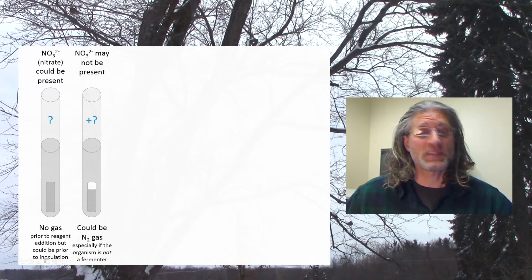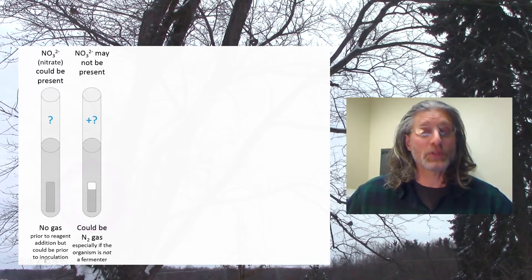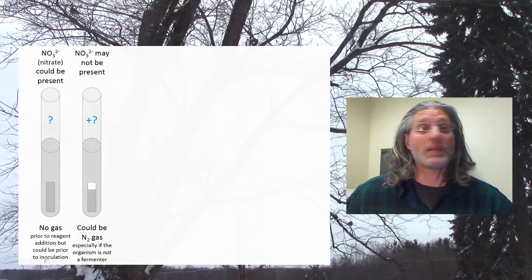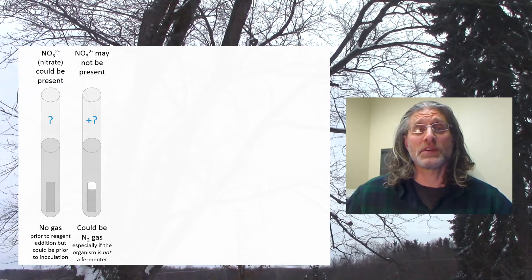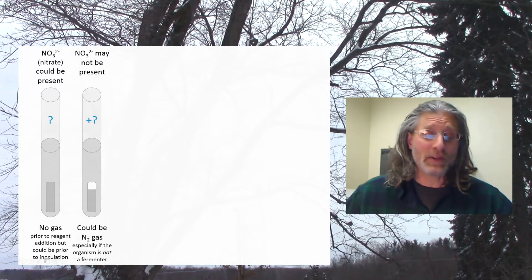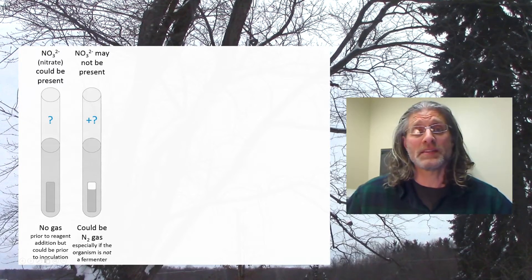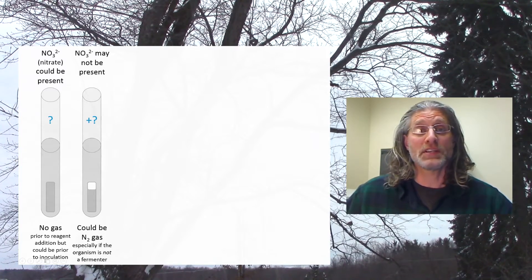Alternatively, after growth of the organism, gas may collect in the Durham tube, in which case you'll see a bubble — ideally a fairly substantial bubble. If nitrate reduction to nitrogen gas has occurred, then that bubble will consist of nitrogen gas. Beware, however, if you are working with organisms known to ferment ingredients in the medium, because in that case gas can collect that will not be nitrogen. However, if you have an organism that is not a fermenter, the presence of gas is a fairly good indication that nitrate reduction to nitrogen gas has occurred.